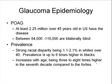With regards to the epidemiology of glaucoma, POAG or primary open-angle glaucoma is the most common form. It affects at least 2.25 million people over the age of 45 in the U.S., and between 84,000 and 116,000 people are bilaterally blind because of it. There is a strong racial disparity: it is more common in blacks and Hispanics than whites, being 1-2% in whites over 40 and up to 6 times higher in blacks. Studies from nursing homes have showed a prevalence of 10% in those aged 70 and older.